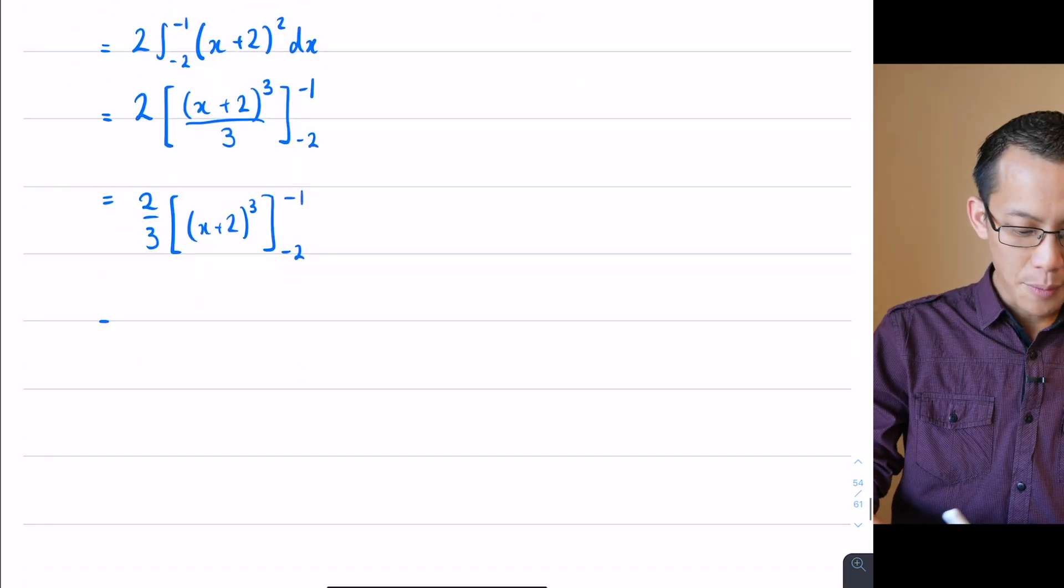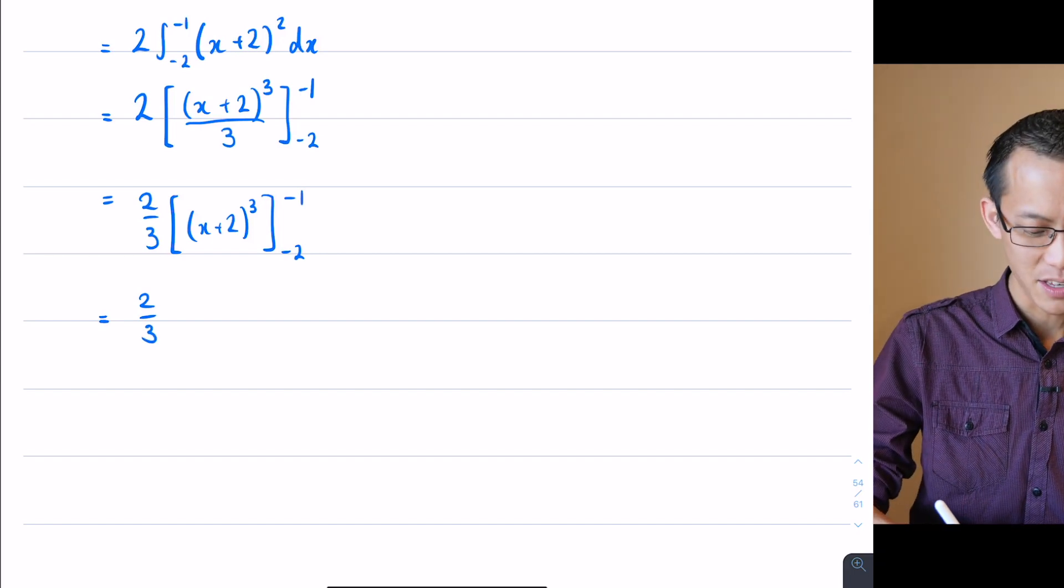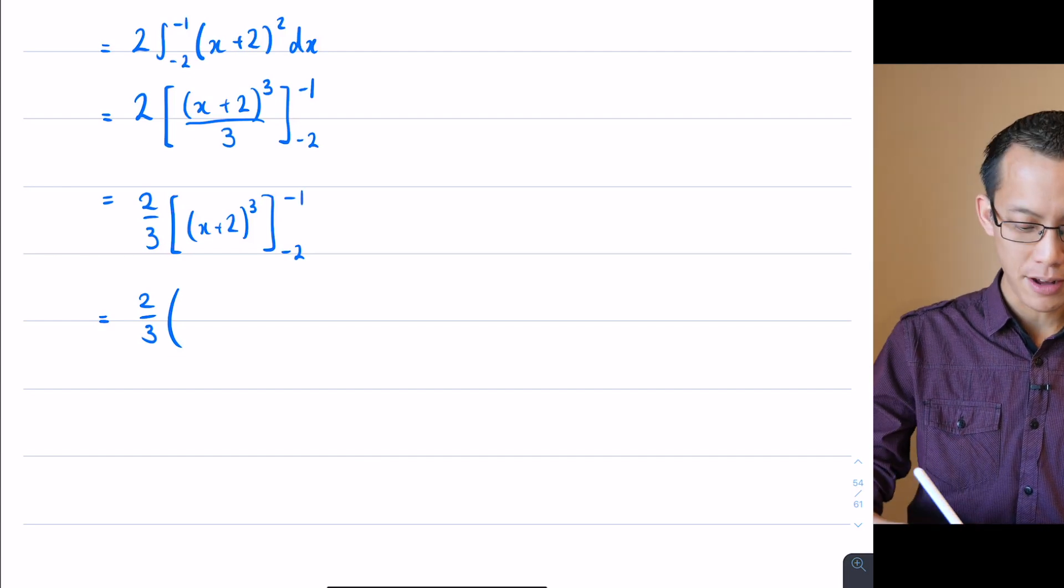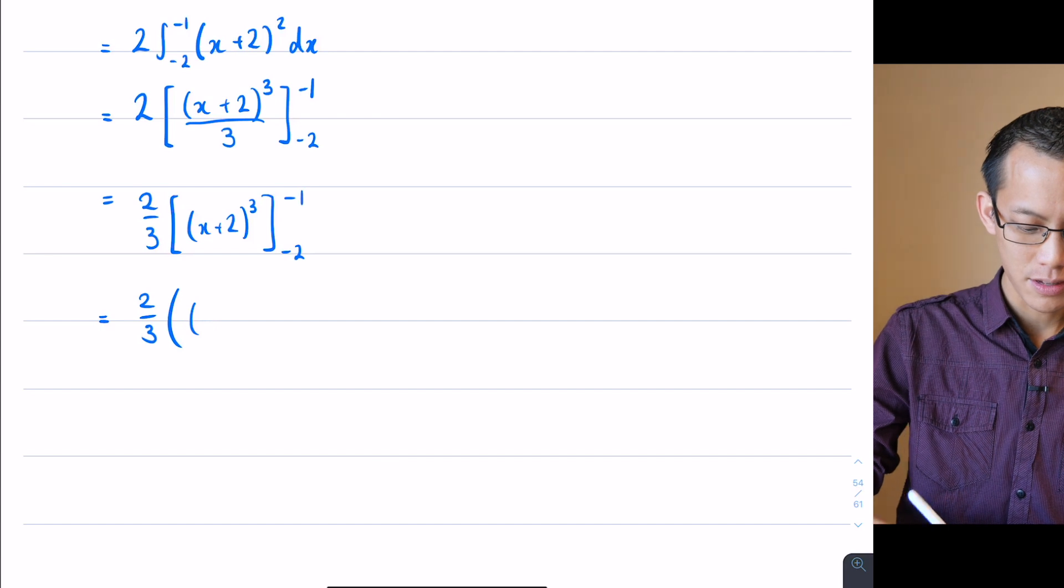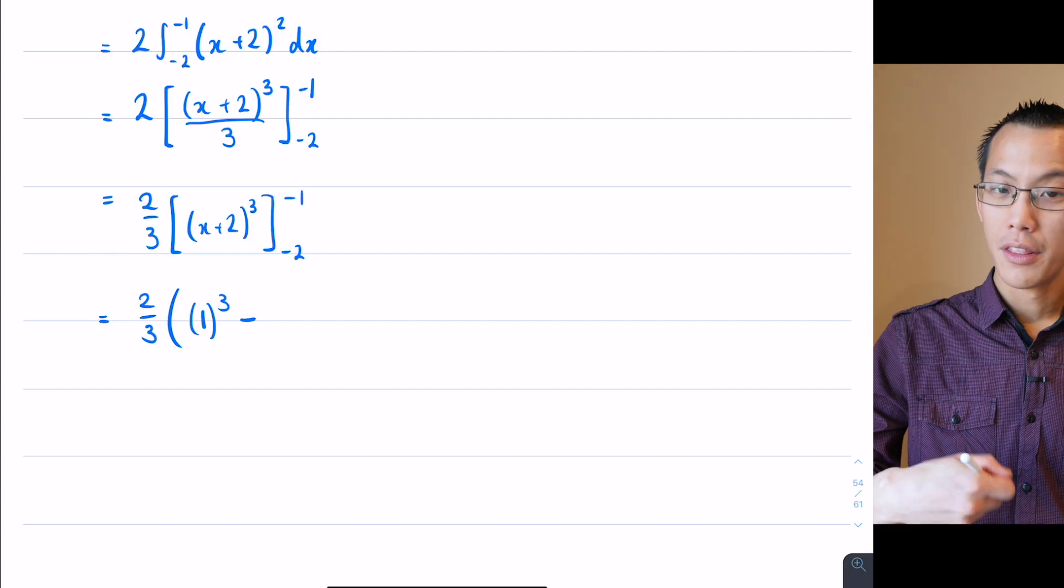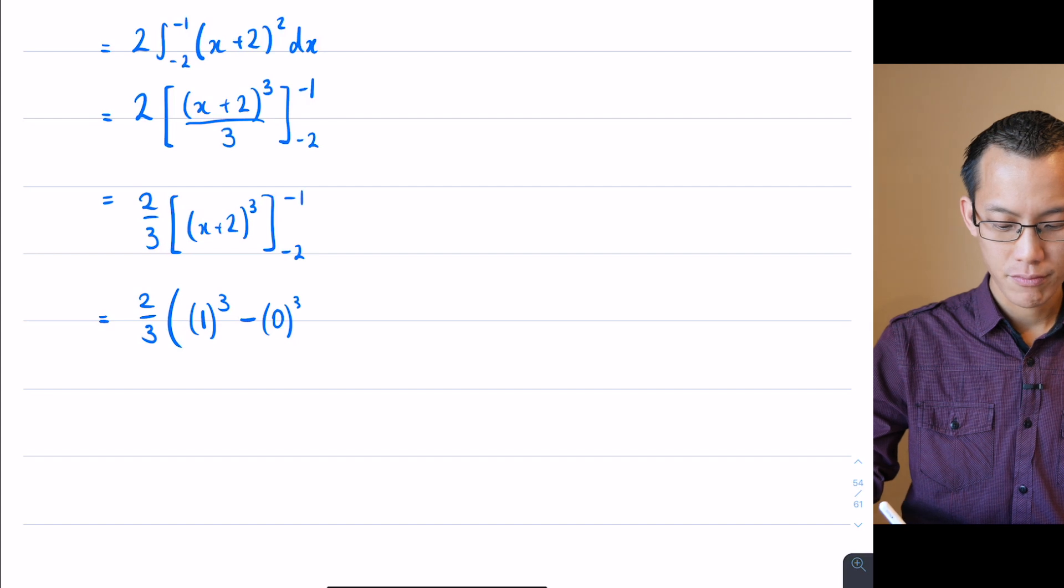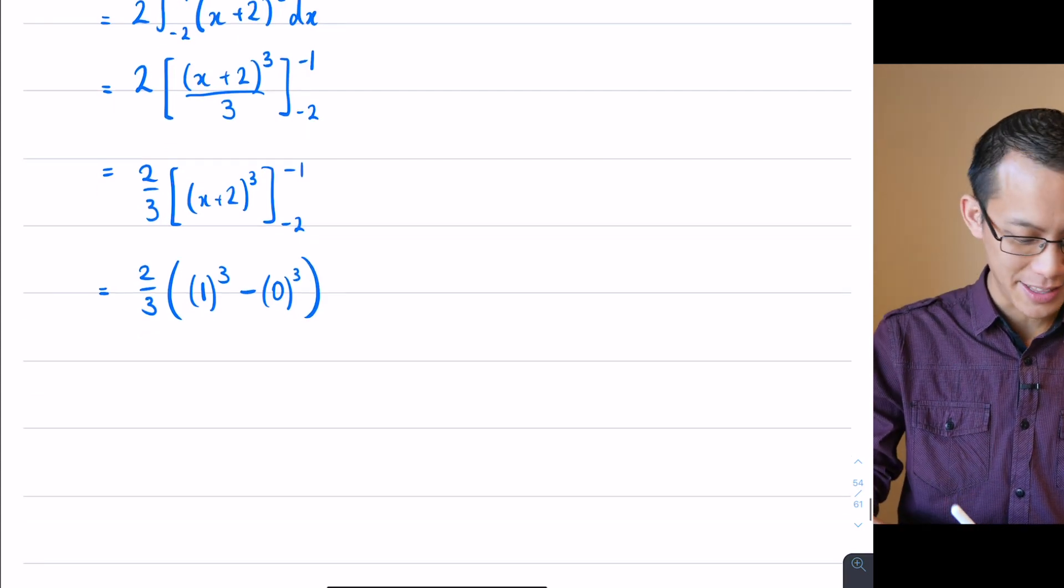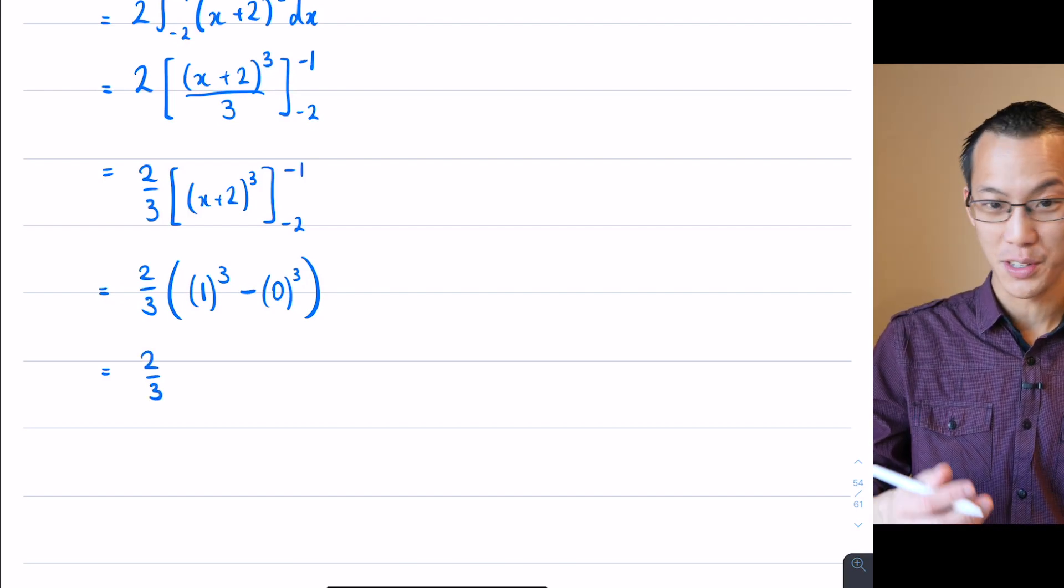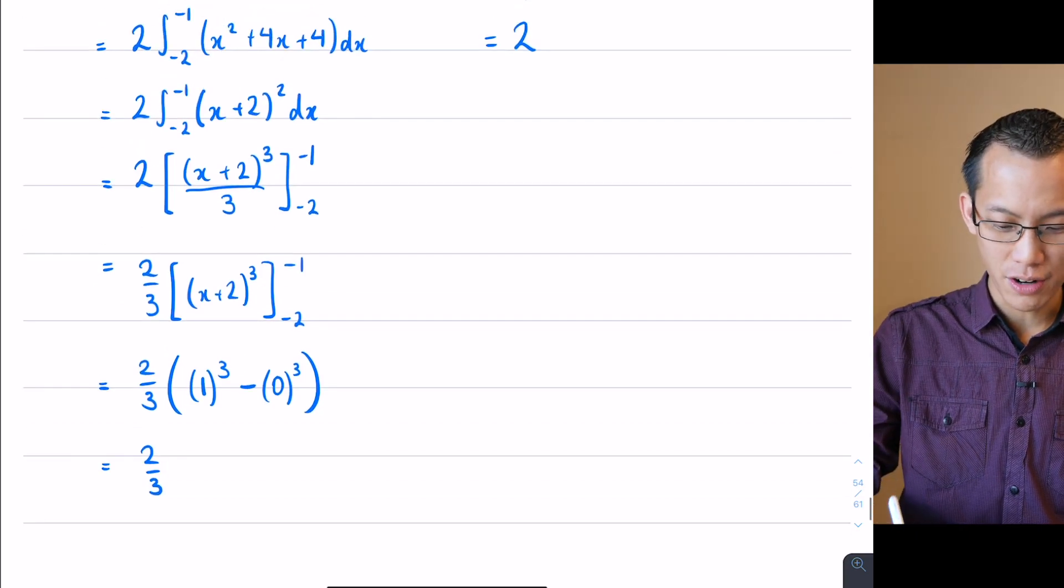What have I got here? Well the 2/3 comes out the front and then I have some really nice easy things to evaluate. So I'm going to have -1 + 2, that's my top boundary, so that gives me -1 + 2 is just 1. There's my upper boundary evaluated. I subtract the lower boundary but then I've got -2 + 2 which is 0³. Look at that, it's almost like I planned this. So this is going to be 2/3 multiplied by 1 take away 0 which is just 1, and this is the answer that we saw before.